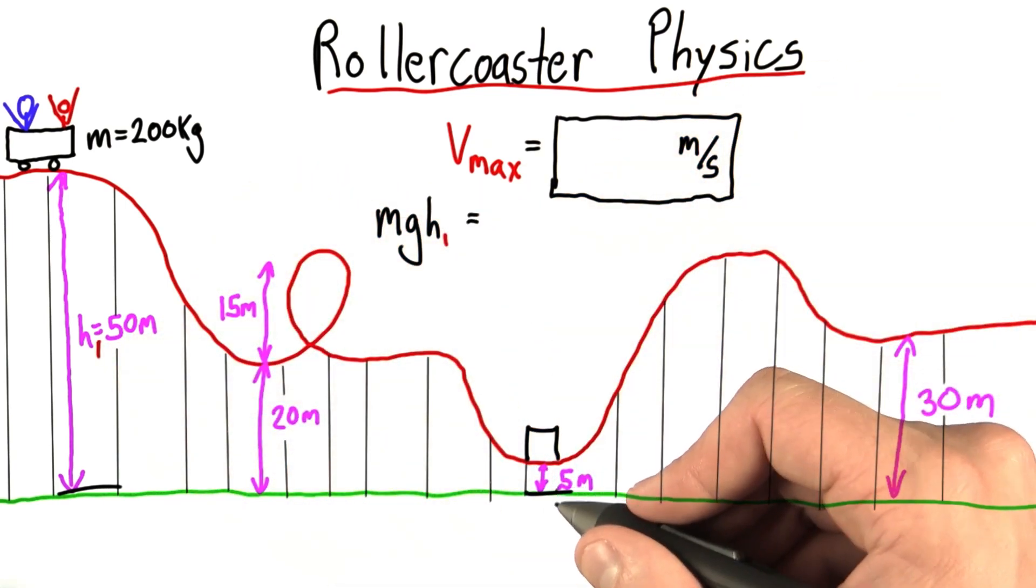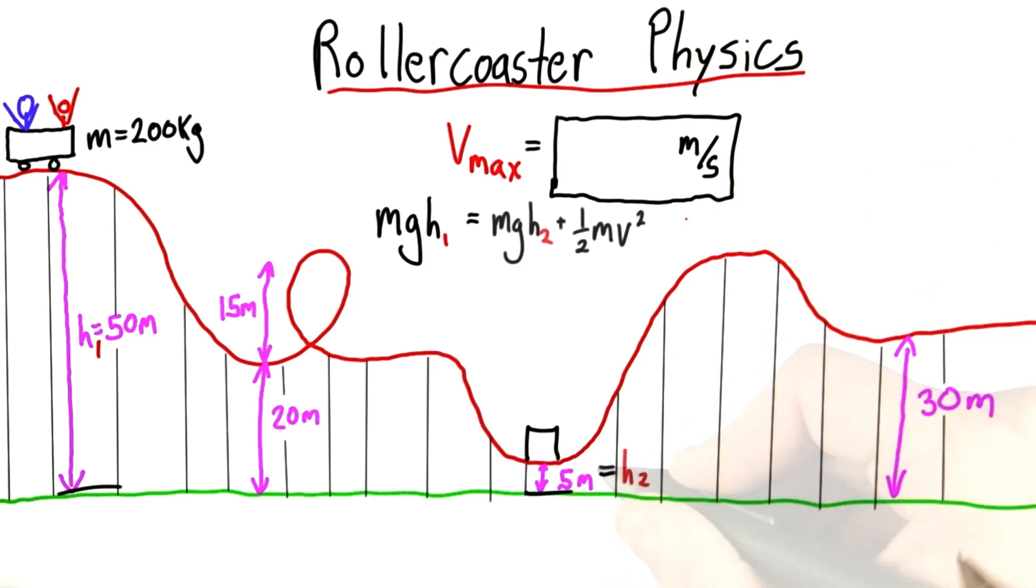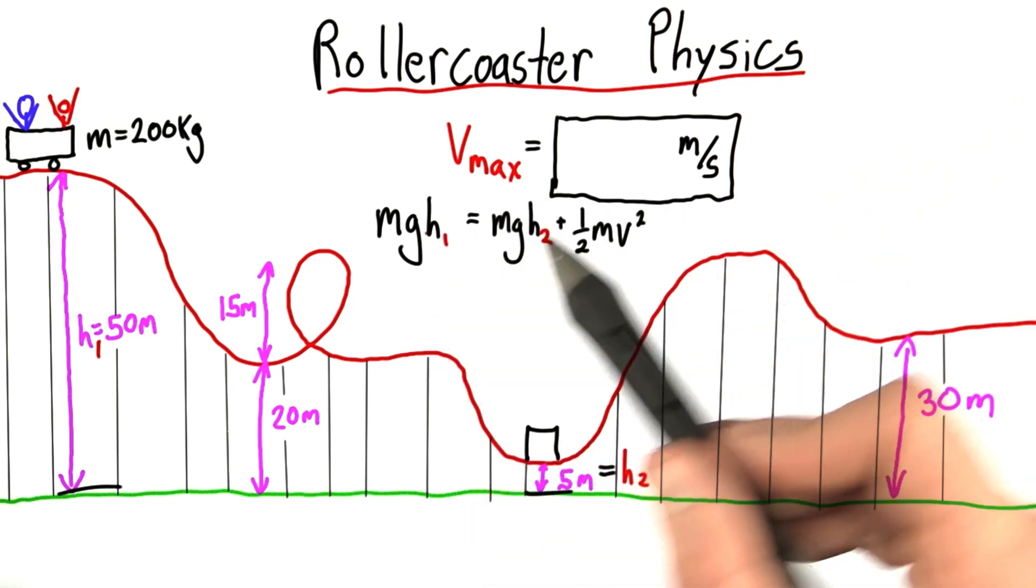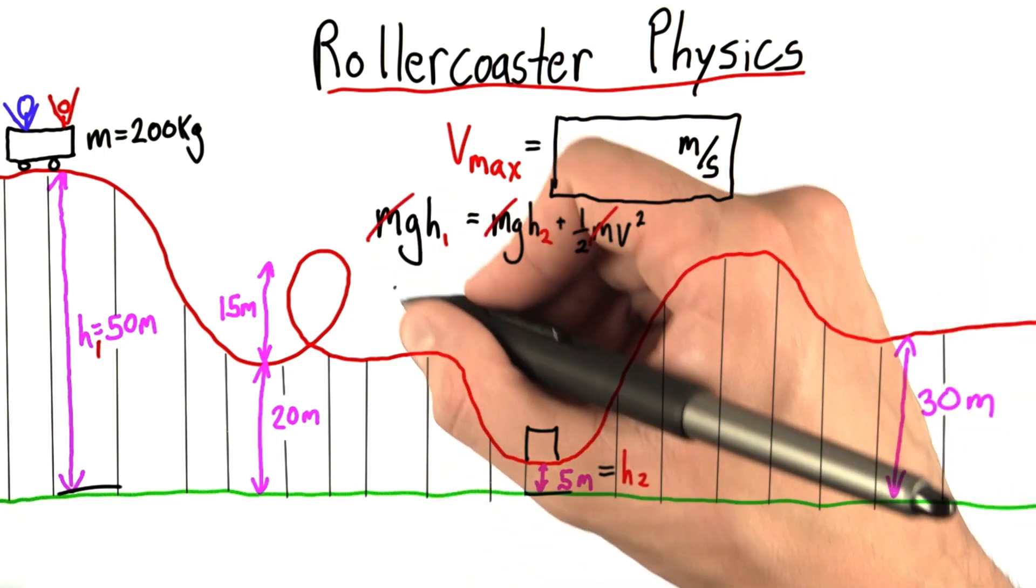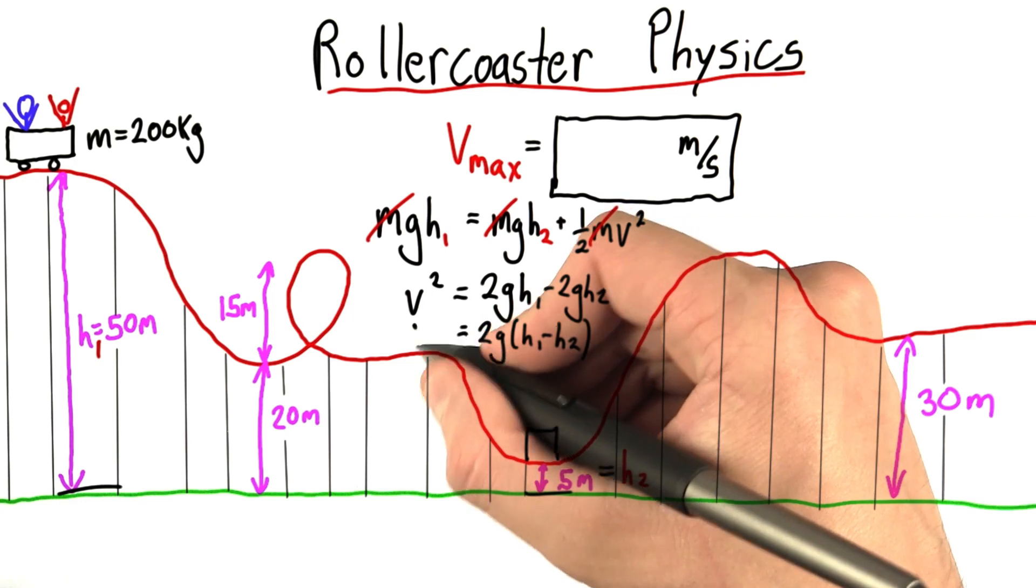By the time it gets to the bottom, it still has a little bit of potential energy, and it has kinetic. We know motion doesn't depend on mass, and luckily the masses cancel out. I can do a little bit of massaging of this equation to get into this form for v squared.